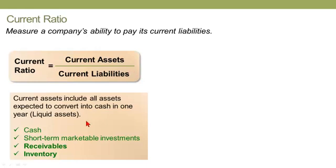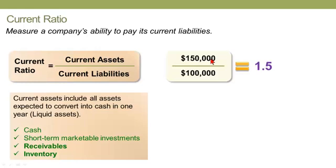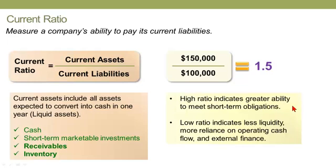With the current ratio, we include in current assets all assets expected to convert into cash within one year: cash, short-term marketable investments, receivables, and inventory. For example, if the company has $150,000 in current assets and $100,000 in current liabilities, the current ratio is 1.5. A high ratio indicates greater ability to meet short-term obligations; a low ratio indicates less liquidity. Keep in mind this ratio assumes receivables and inventory can be converted into cash, which may be a dubious assumption.